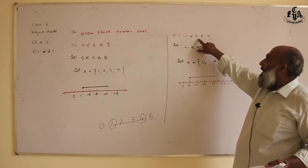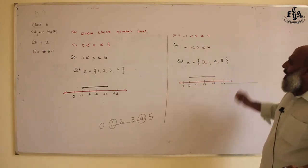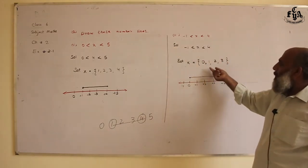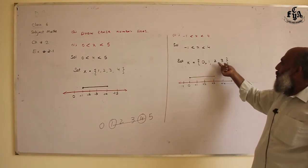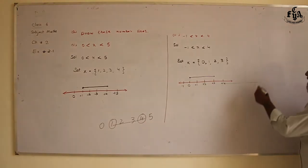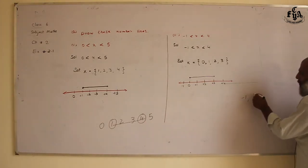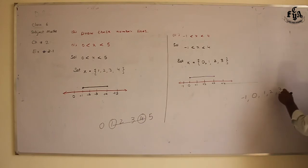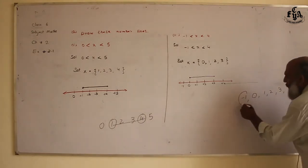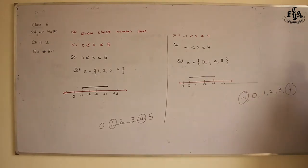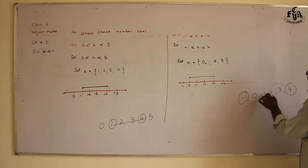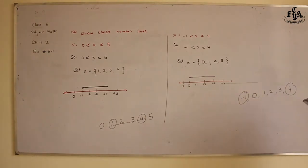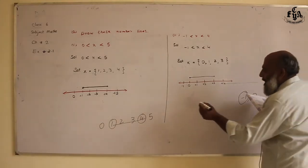The next question: minus one is less than x and x is less than four. Which numbers belong to this set? The set of integers between minus one and four — excluding minus one and four themselves — gives us zero, one, two, three. So the numbers that remain are zero, one, two, three. These numbers are shown on the number line for this question.